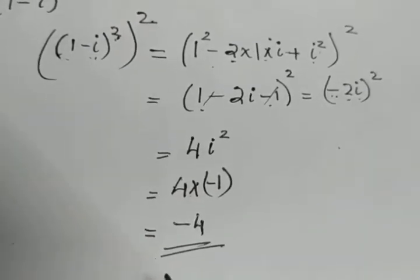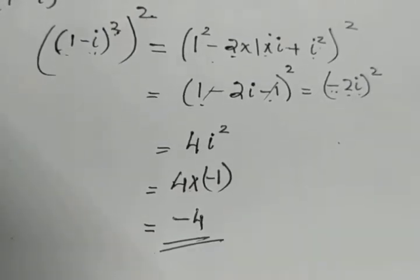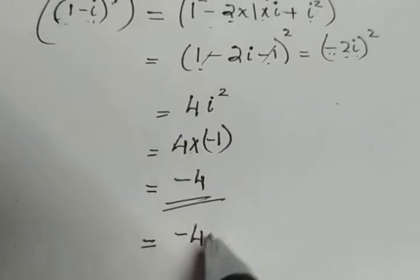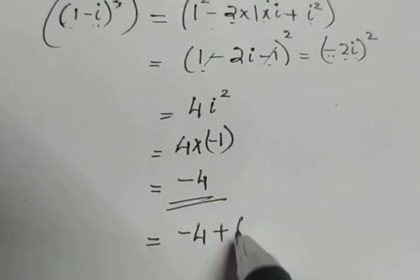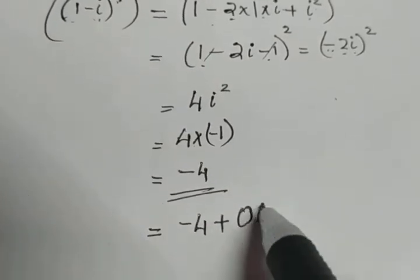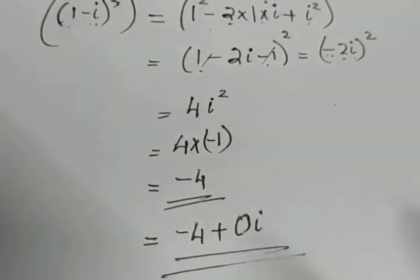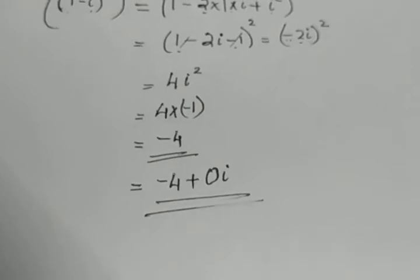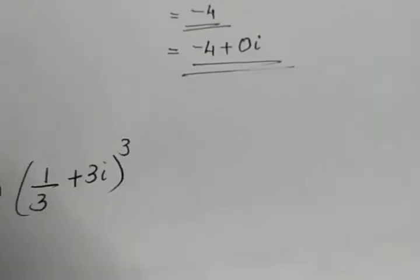Since the question is to express in the form a plus ib, we can rewrite it as minus 4 plus 0i. The next question: